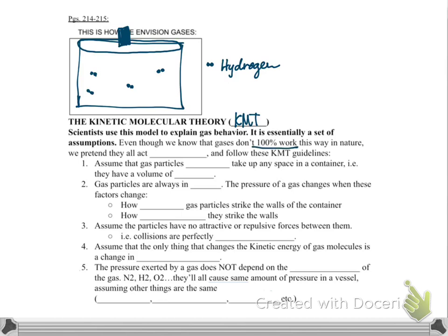This set of assumptions doesn't 100% always work. There are certain conditions under which the assumptions break down. But for starting, we'll pretend that these 100% work all the time. We'll pretend these gases always act ideally as we build up our understanding. Just like if you took physics, you start in a world with no friction. You pretend friction doesn't exist, even though you know it's there causing issues. Same thing here.